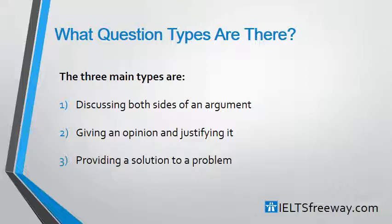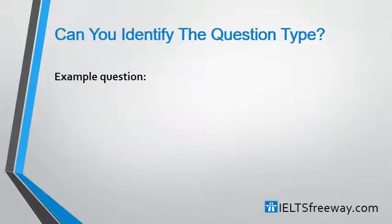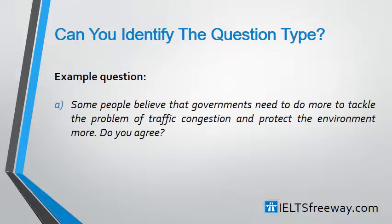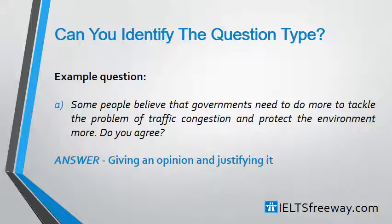Now you know what the three main types of questions are, let's see if you can work out what type of questions these are. Example question one: 'Some people believe that governments need to do more to tackle the problem of traffic congestion and protect the environment more. Do you agree?' Pause the video and have a think. The answer is that it's a giving an opinion and justifying it essay — the key being at the end where it says 'do you agree,' indicating that you need to give your opinion.